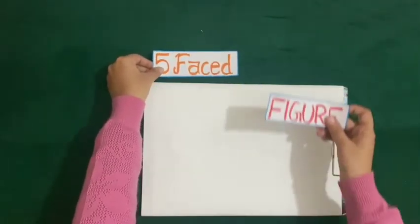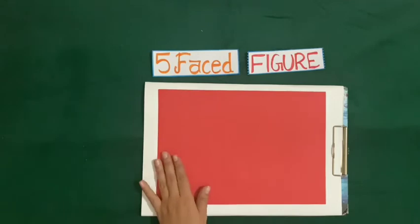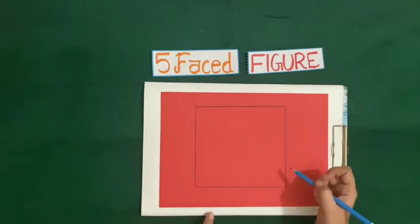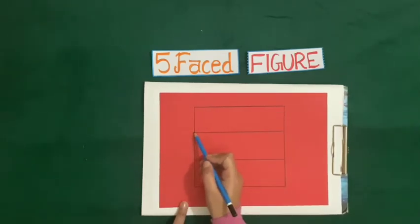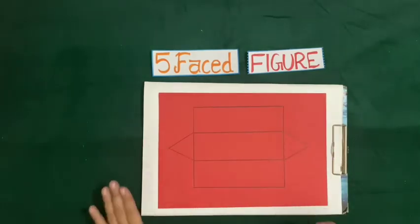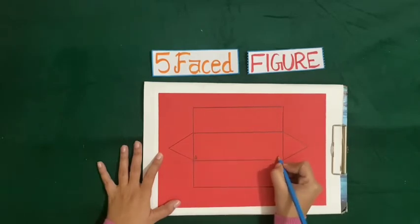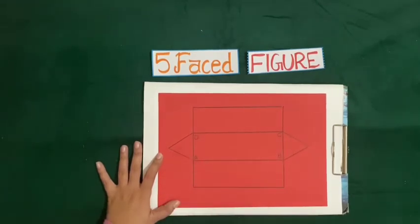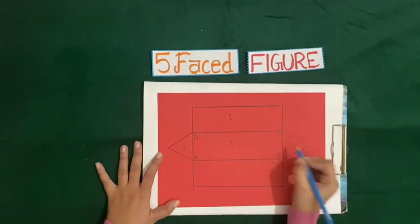Next we will make a five-faced figure. For this again we will take a paper and draw a figure on this paper with help of pencil and scale. Now we have drawn a rectangle and we will divide this rectangle into three equal rectangles. From the middle rectangle we will draw a triangle on both sides. Now we will label the sides: A, B, C and D. Now let us count the parts of this diagram: 1, 2, 3, 4 and 5.